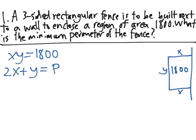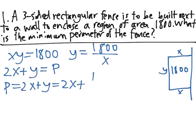Now that we've written out the equations corresponding to this problem, we need to identify the quantity that we're optimizing, in this case it's the perimeter, so P, and find a way to write it in terms of only one variable. So from the equation xy equals 1800, we can write y is equal to 1800 divided by x. Then we can rewrite P equals 2x plus y, which is 2x plus 1800 divided by x.